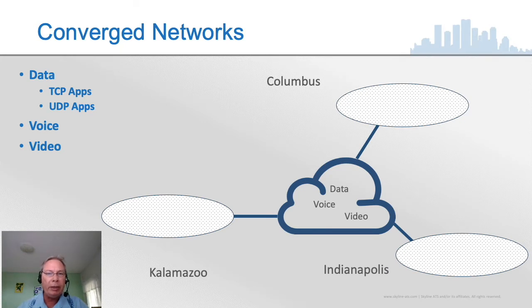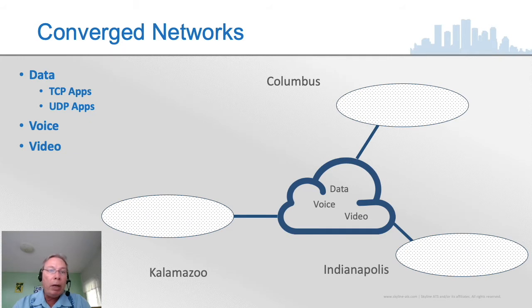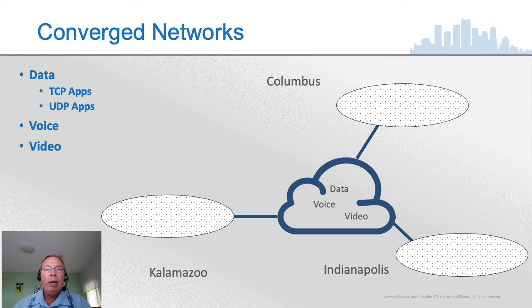Data type applications — a company will have created or purchased some type of data app, and what they bought is going to determine its requirements. Is it TCP-based, whereby it can make up for lost packets and do retransmits? Or is it UDP-based, in which case it cannot? TCP will guarantee delivery of packets; UDP doesn't. Voice and video are both applications that typically use UDP, because we really don't want voice traffic retransmitted — we want it to go through the first time.